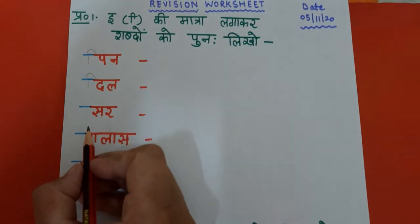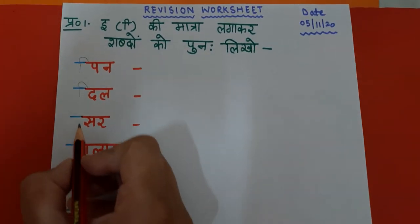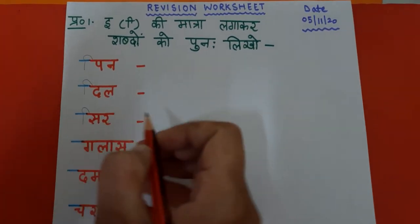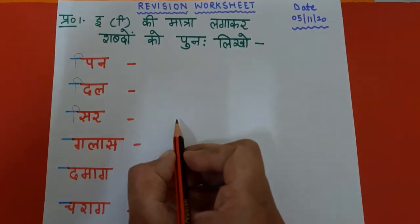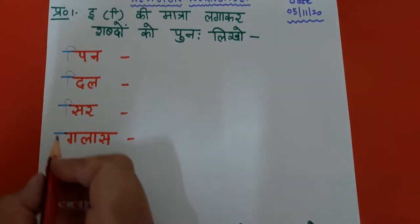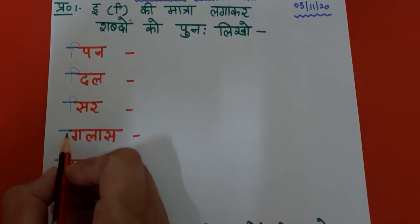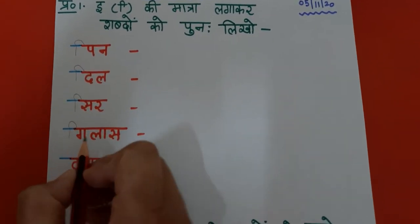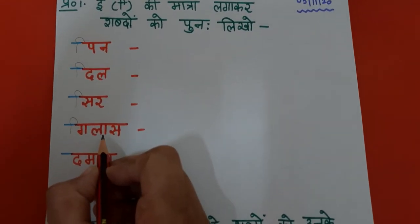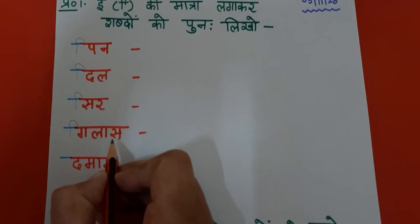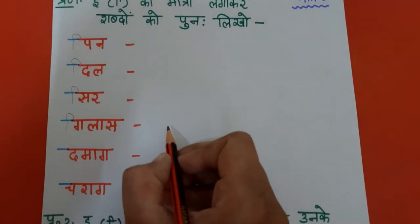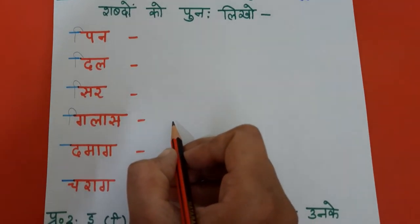Next, sa — s appe chhoti E ki maatra si r, sir. Yaha pe aapko sir likhna hai. Gha ka appe chhoti E ki maatra gih, lal appe a ki maatra lah sa, gilaos. Yaha pe aapko gilaos likhna hai.